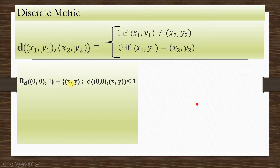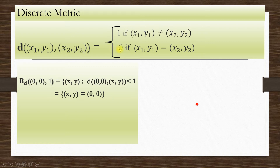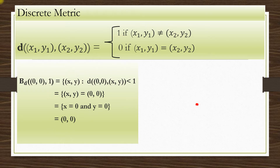By the definition, this equals the set of all (x, y) such that d((0,0), (x,y)) < 1. Strictly less than 1 means the set of all (x, y) equal to (0, 0), because when two points are equal the metric equals 0, which is the only value strictly less than 1. So this open ball contains only the point (0, 0).